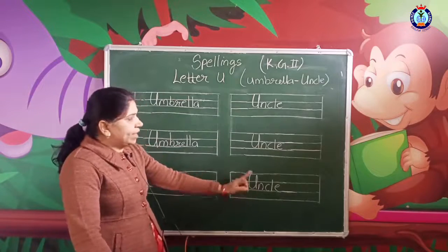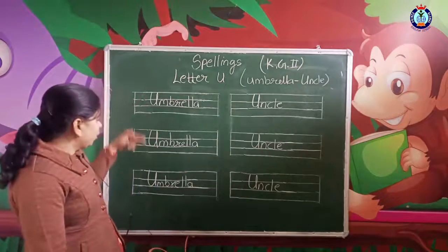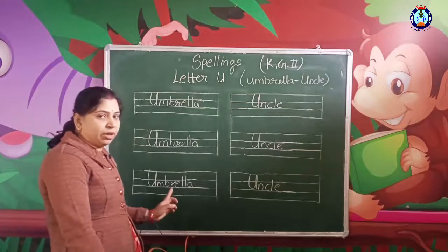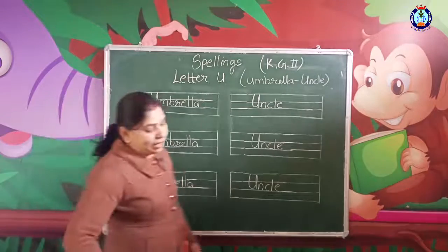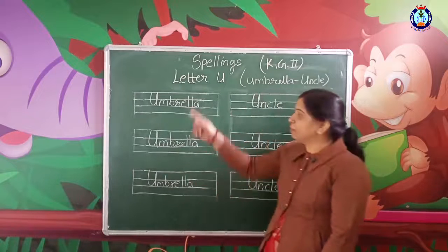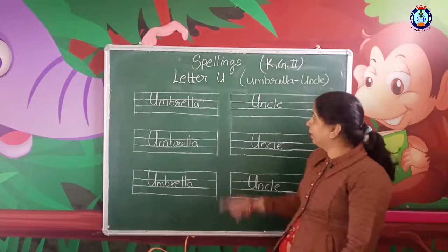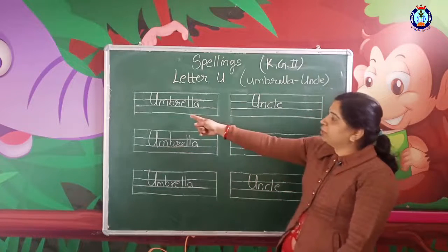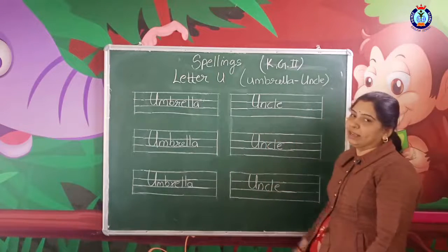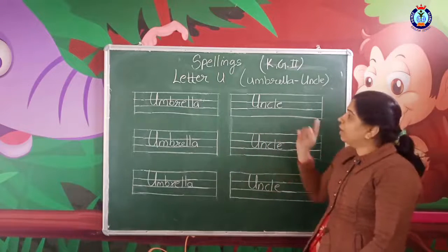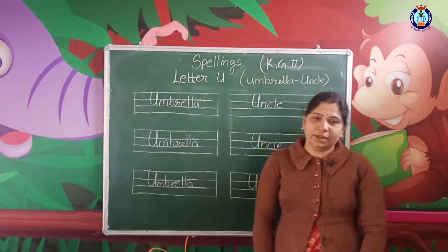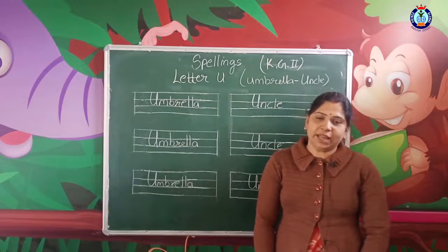So three times we have seen uncle. Uncle is the spelling — write it down. You have to write it down three times. U, N, C, L, E. Uncle. You both are going to learn, and you can write it down. Thank you.